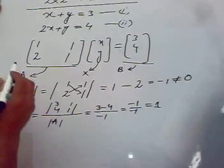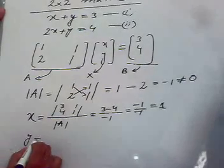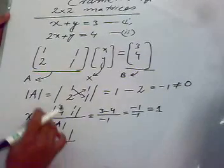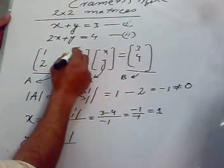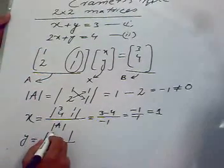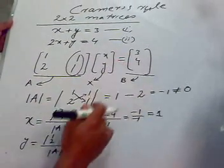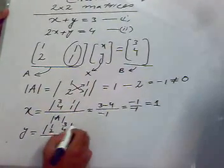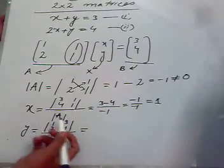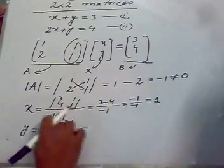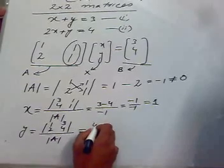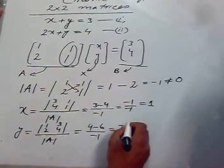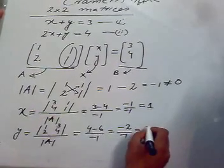Now to find out the value of other variable that is y we will have to consider new matrix and we will again divide it with A determinant. And now we will leave the column of y. So this is the column of y. We will leave it and we will just write 1, 2. And again to fill its value we will put this matrix instead of the column of y. This will be 3, 4. Now if we again open, this is just solving a determinant. It will be 4 minus 6 over again minus 1. So that will be minus 2 over minus 1 and this will be 2.